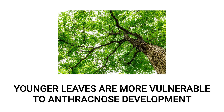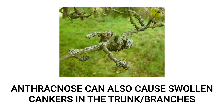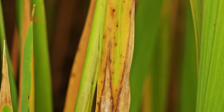Younger, developing leaves are more vulnerable to disease development than older leaves. In severe cases in trees, defoliation can occur, where large numbers of heavily infected leaves fall from the tree earlier in the season than expected. Some trees may even form cankers — sunken areas with swollen edges. Anthracnose of turf grass can look different depending on the time of year.